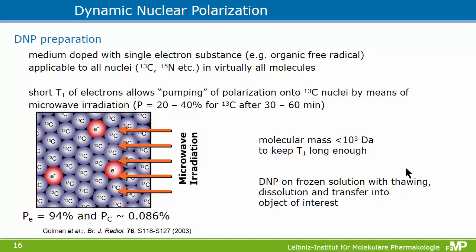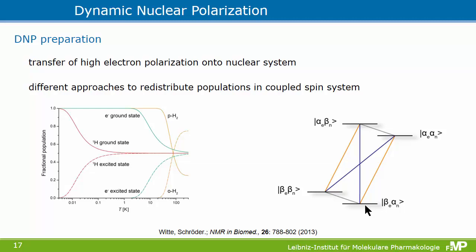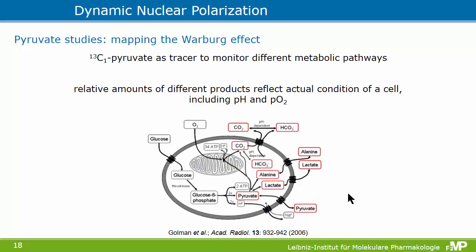The idea is that electrons have a larger magnetic moment, allowing polarization to be achieved at temperatures between 1 and 10 Kelvin in the frozen solution. This is transferred in a microwave experiment via a double spin flip: you go from the ground state and flip both the electron and the nuclear spin of adjacent nuclei from pyruvate, for example. The electron state then relaxes relatively fast, resulting in a net spin flip of the nucleus, achieving decent polarization. You pump the system with microwaves for about up to an hour and achieve a polarization of tens of percent.